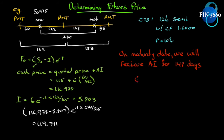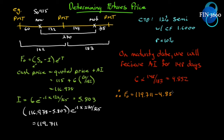What's the accrued interest at maturity? It's a 12% semi-annual bond, so the coupon is $6. There are 183 days in the period from last payment to next payment, and we've held it for 148 of those days. So accrued interest = 6 × (148/183) = 4.852. For there to be no arbitrage, the futures price must equal 119.711 - 4.852 = 114.859.